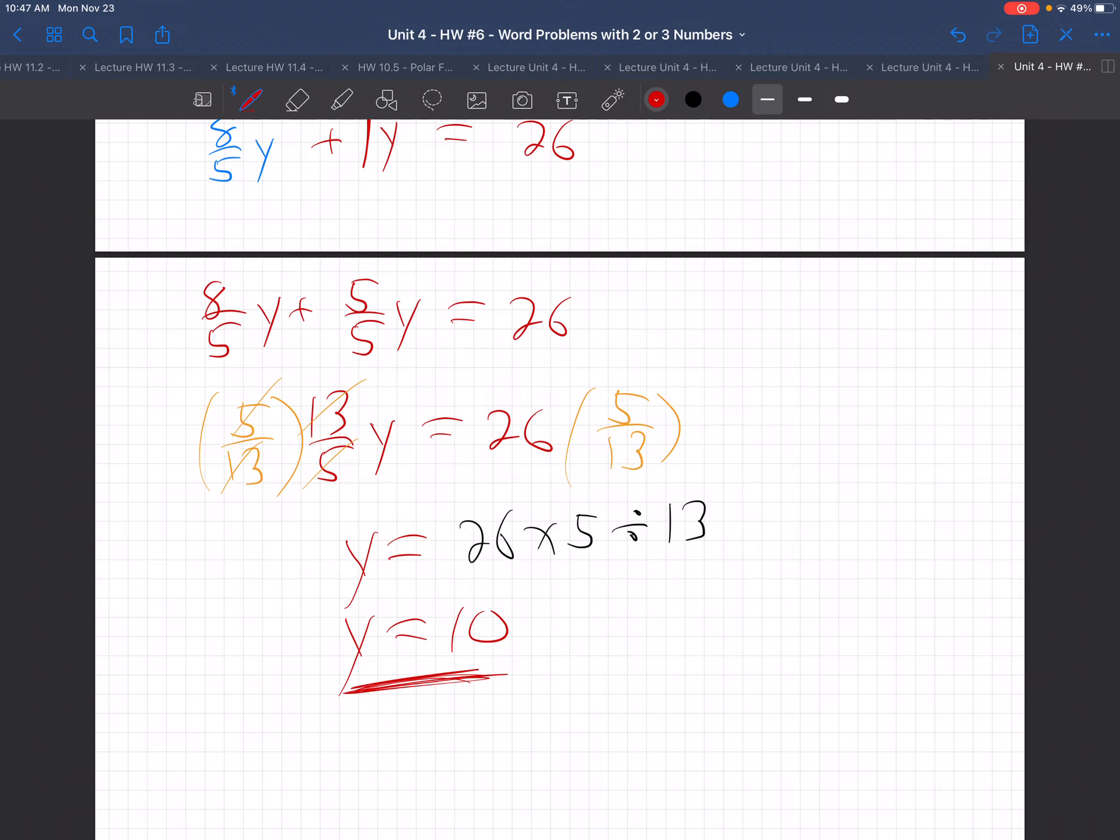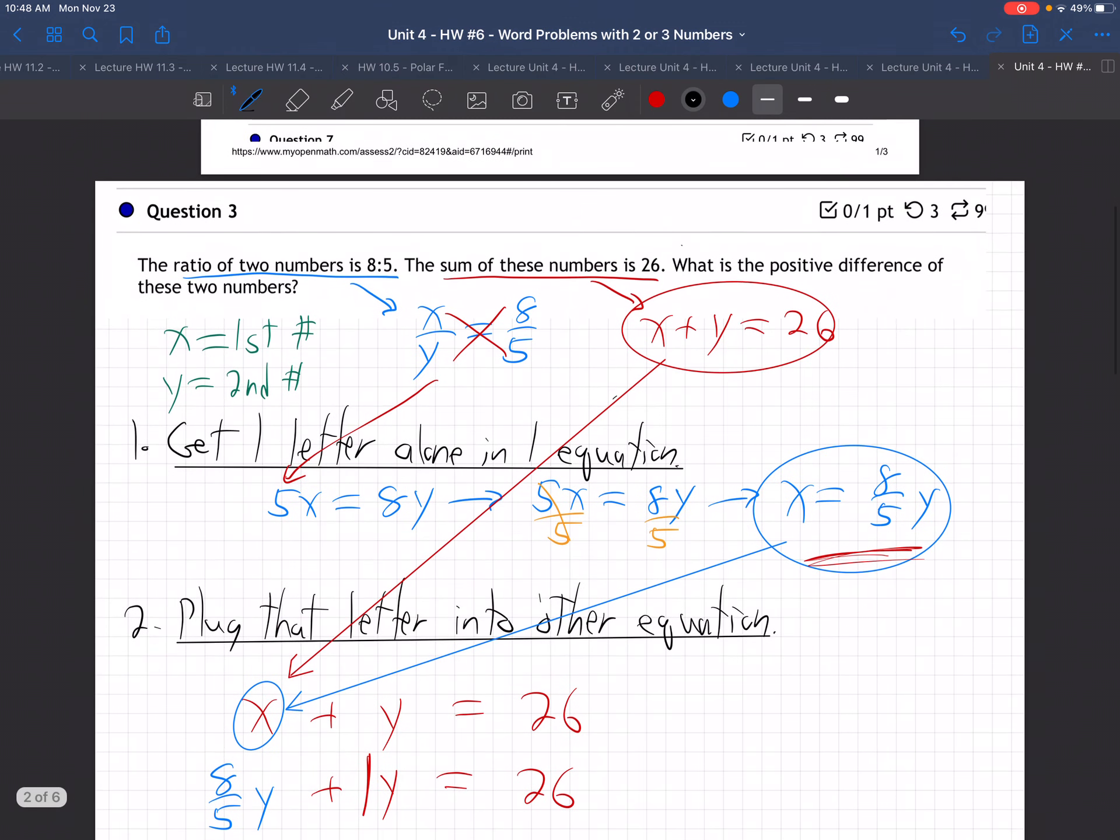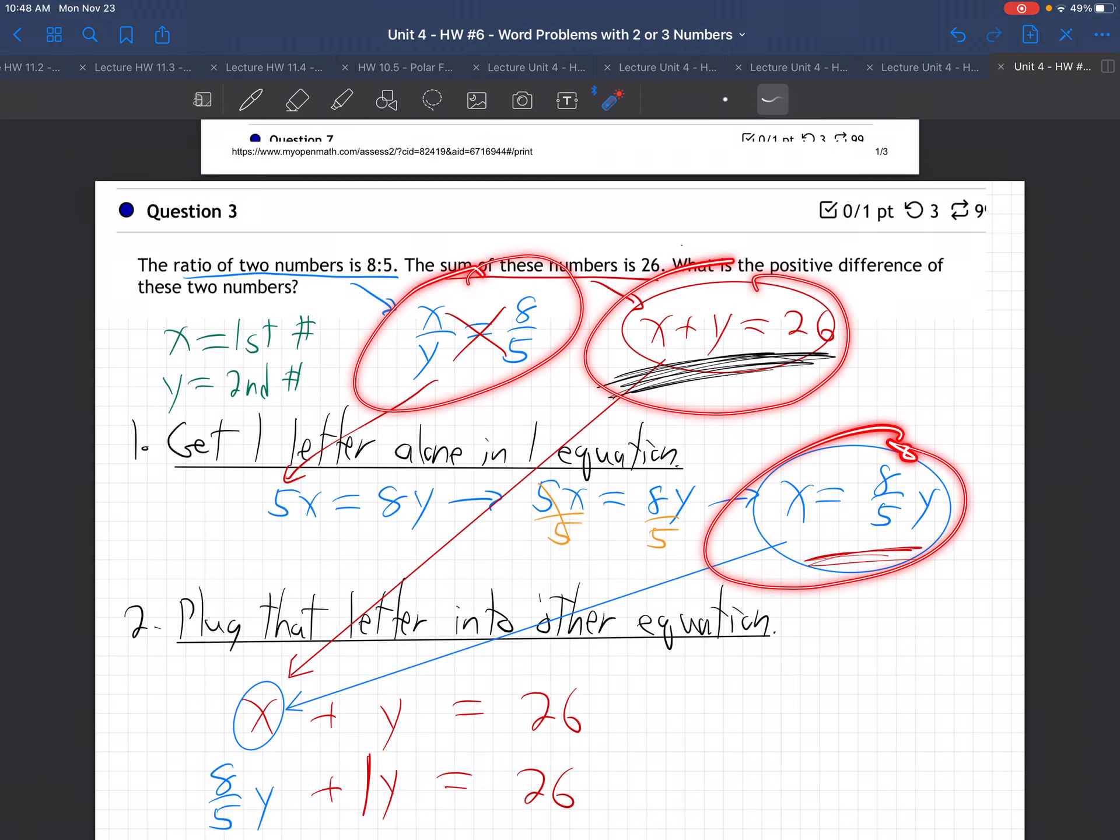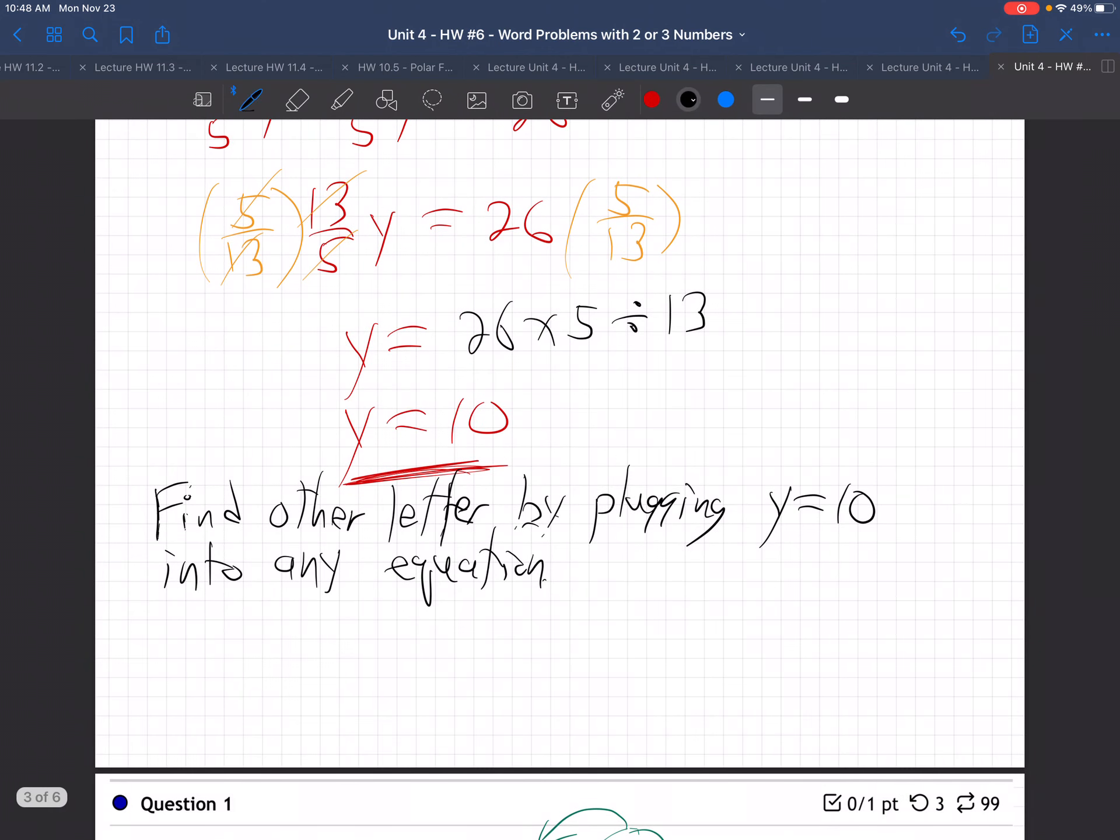We got y, but now we got to get x. How do we get the other letter? You find the other letter by plugging y equals 10 into any equation. It doesn't matter. I think I'm going to grab this one. This looks easiest. But you could use this one, or this one, or this one. It doesn't really matter. You can't go wrong. I'm just going to grab that one. x plus y equals 26.